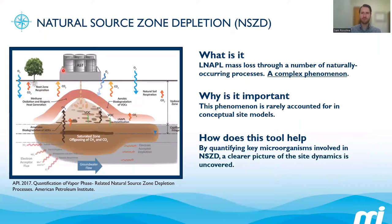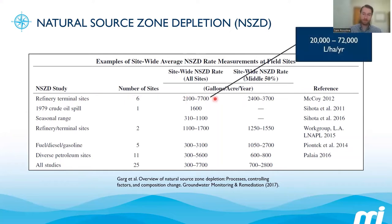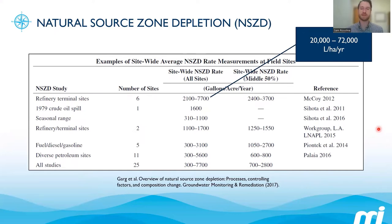Why do we care about monitoring NSCD? Through a large analysis of many different sites undergoing NSCD, GARG was able to see relatively high rates of source removal under natural conditions — around 2,100 to 7,700 gallons per acre per year, or about 20,000 to 72,000 liters per hectare per year. It's not a number worth turning your back on — it's worth investigating more. If there's a potential that this is happening at your site, these are rates that are seriously helpful in terms of remediation timelines and cleaning up the site.